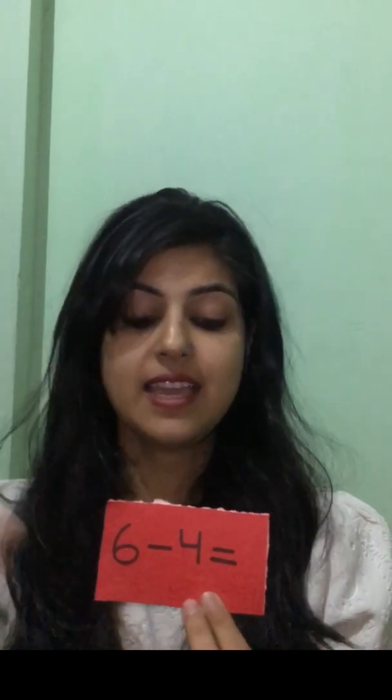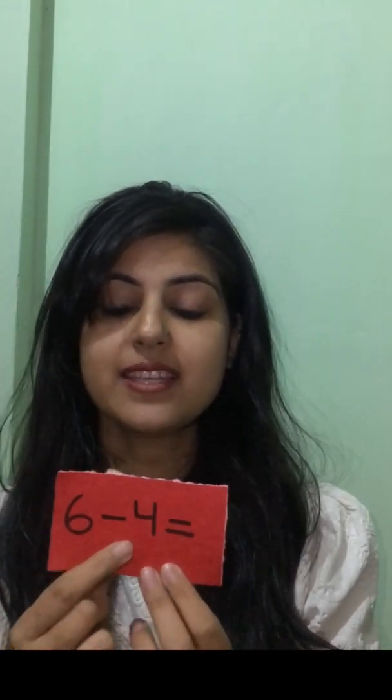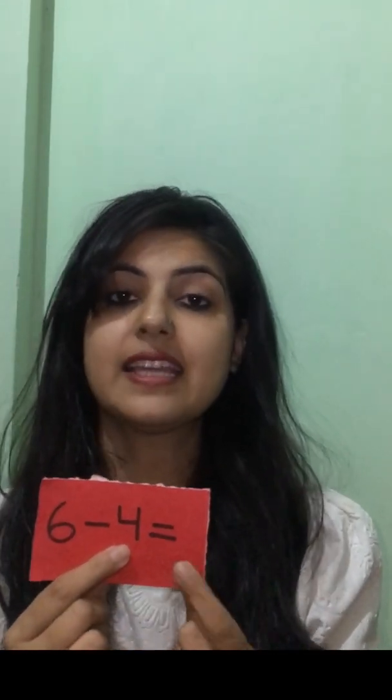So the bigger number will be in our mind, and the smaller number 4 on our fingers. So 6, 5, 4, 3, 2. The answer is 2 — so 6 minus 4 is equal to 2.